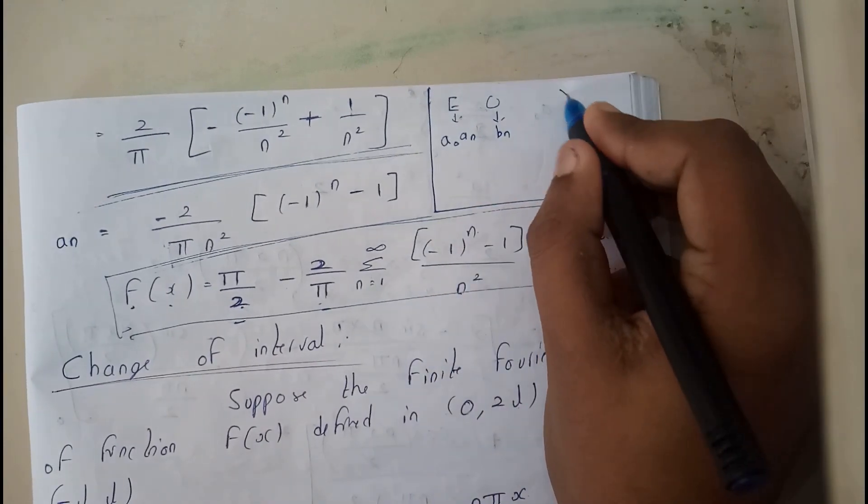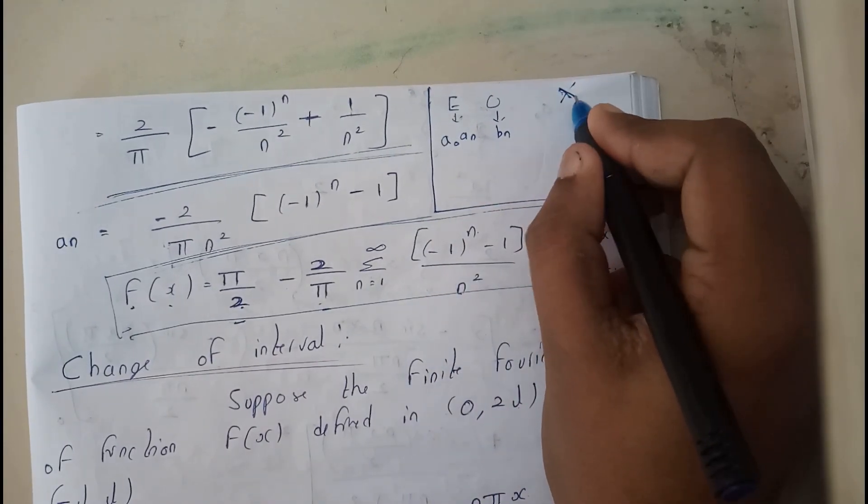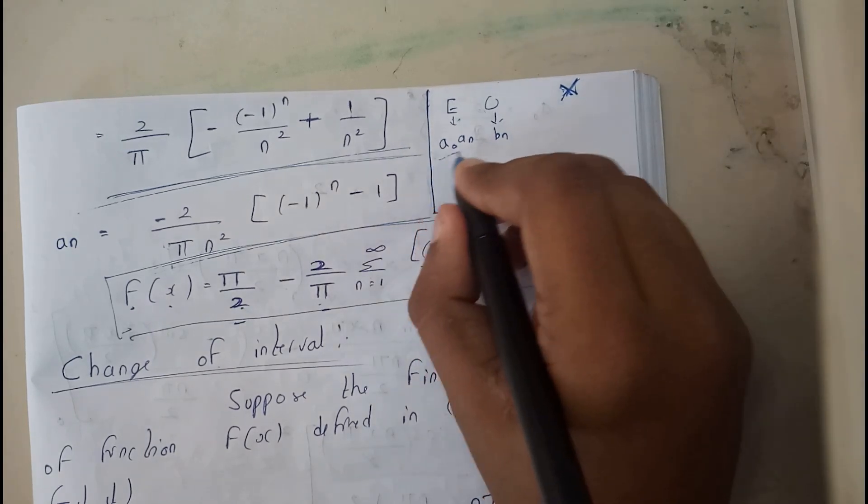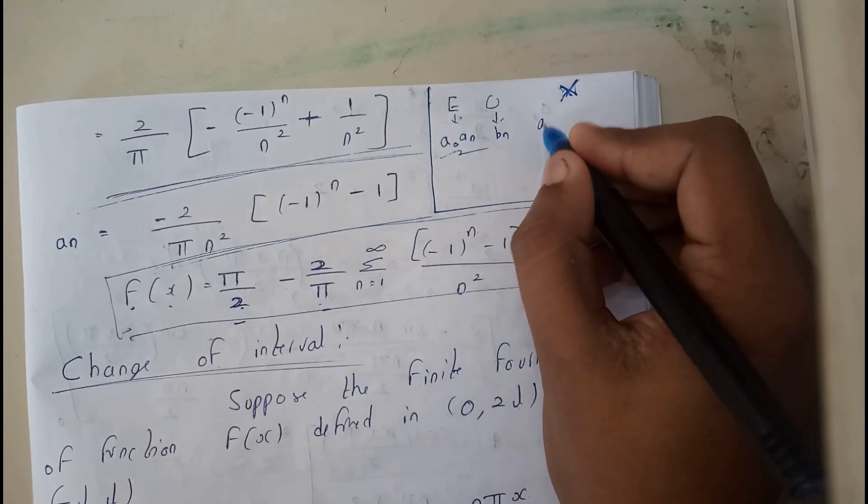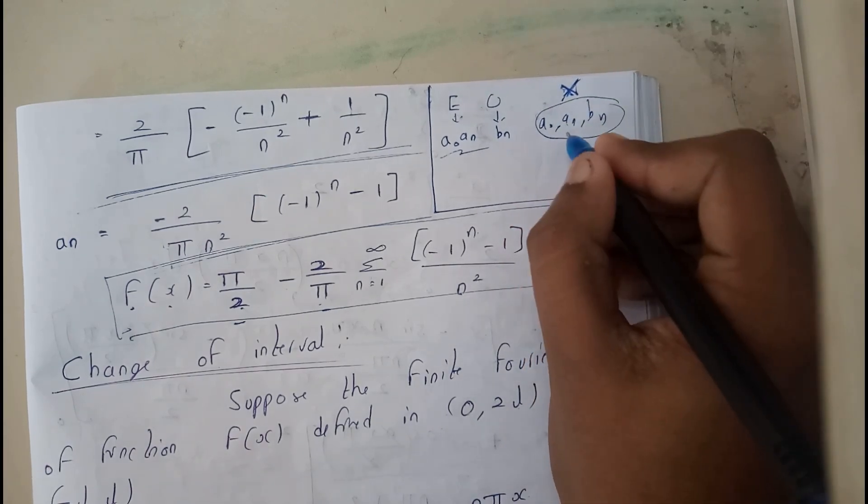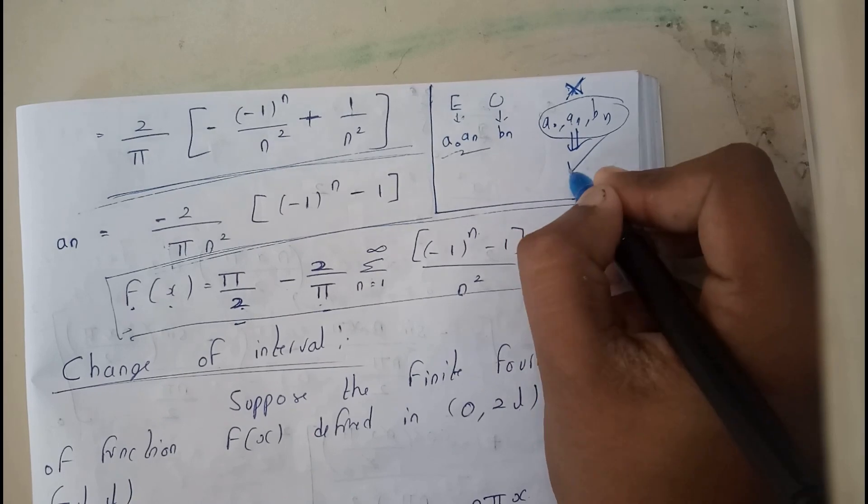So if there is a question in which we didn't identify whether it is an even function or an odd function, basically go with the normal formula of these three - the original formula which consists of a₀, aₙ, and bₙ. Find the three values so that your solution will be absolutely correct.